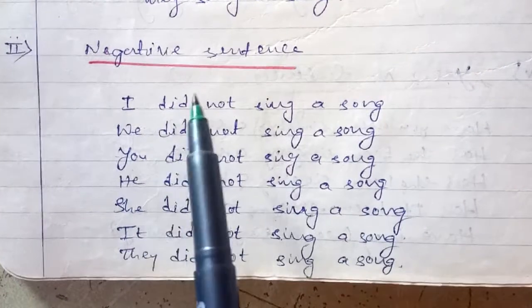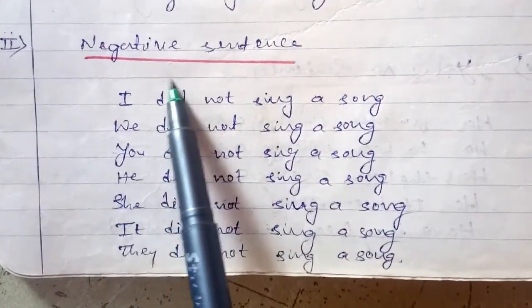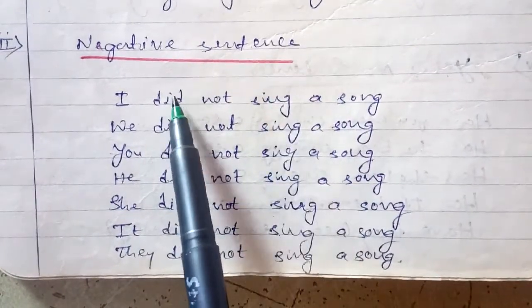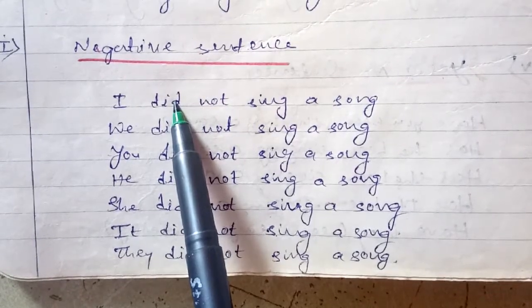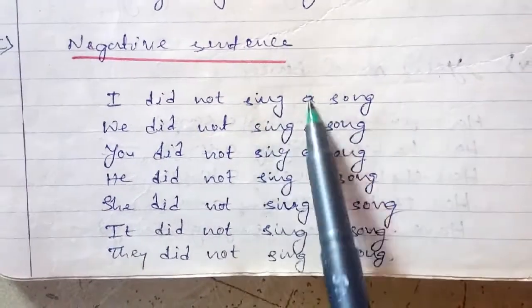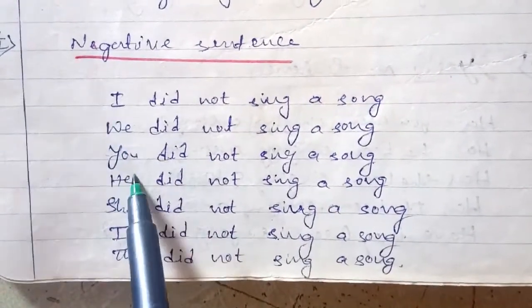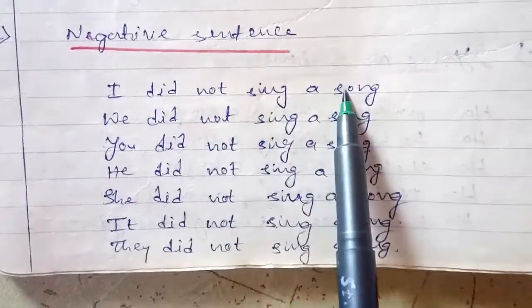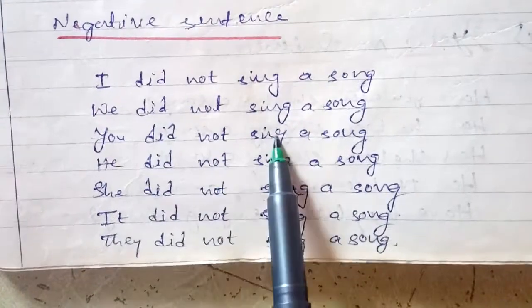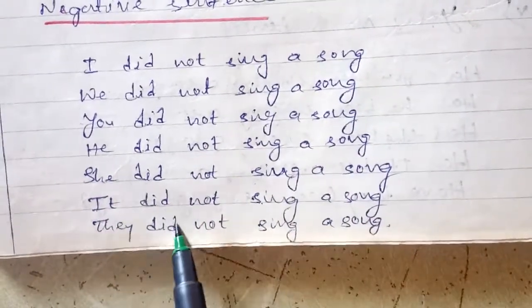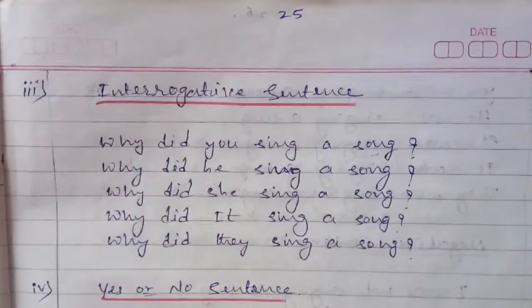Now let's go for learning the negative sentence. In a negative sentence: subject, helping verb 'did,' and a negative word come, and the main verb should be in present tense. For any pronoun — I, we, you, he, she, it, they — the helping verb will be 'did not' only. Examples: I did not sing a song, we did not sing a song, you did not sing a song, he did not sing a song, she did not sing a song, it did not sing a song, they did not sing a song.